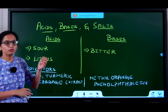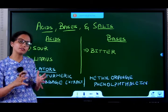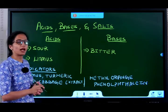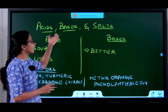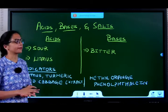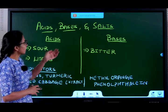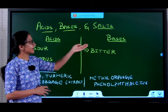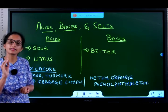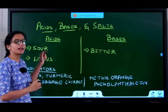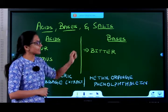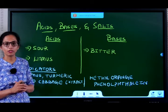Substances are broadly classified into acids and bases. When you combine them, you get salts — we will come to salts a little later. Acids taste sour in nature; bases taste bitter in nature.